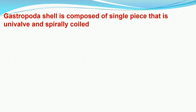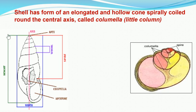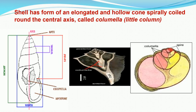As we know, the apple snail or Pila belongs to gastropods, and in gastropods the shell is composed of a single piece — that is, univalved and spirally coiled. The shell is elongated and hollow, spirally coiled around the central axis called the columella, and in gastropods we always have a unilocular type of shell.